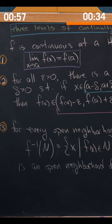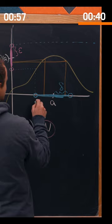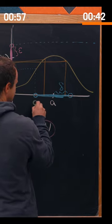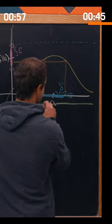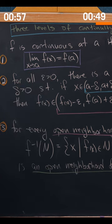Notice for this definition, maybe we would take this magenta to be our open neighborhood of f of a. The preimage in this case would start at the same place, but then it would extend infinitely to the right. That would be the open neighborhood of a that gets mapped onto this open neighborhood.